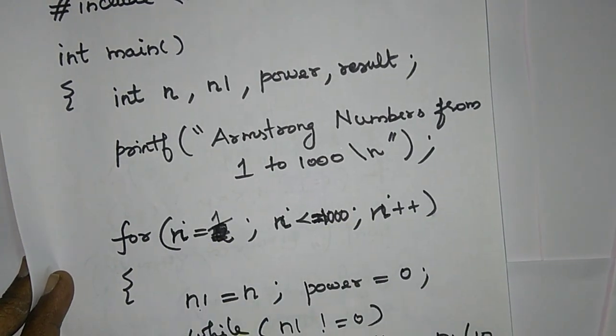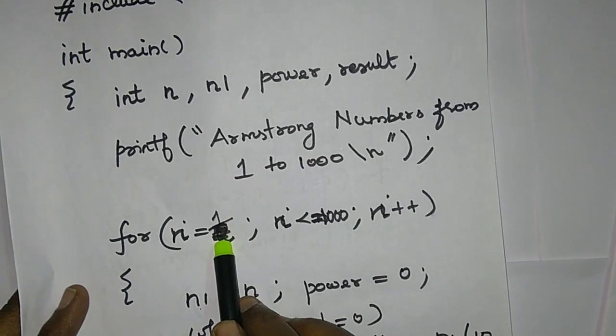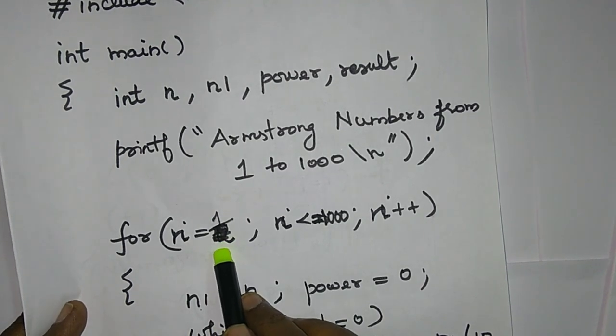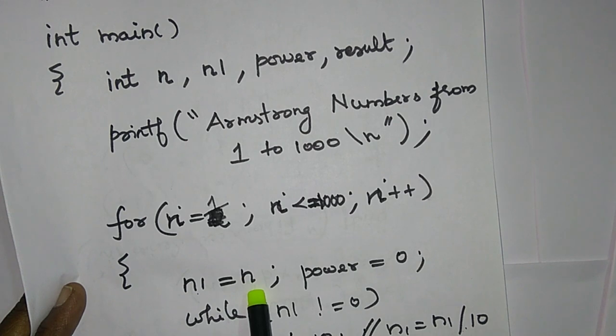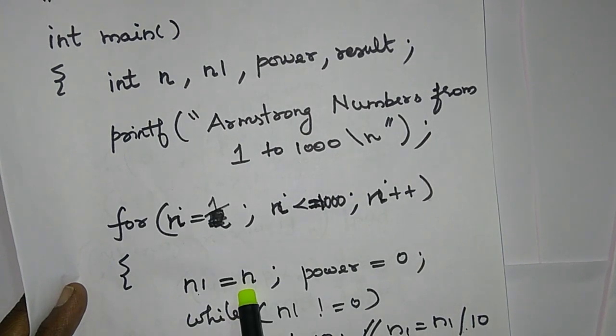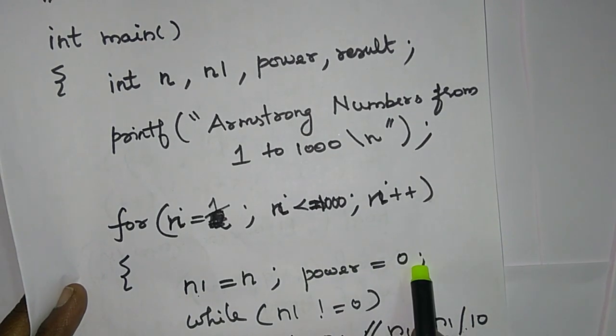We will use a for loop. It is the same Armstrong number. That is why we will do that. What do we do? For any reason, we will also use n1 equal to n. We will add value to power equals 0.